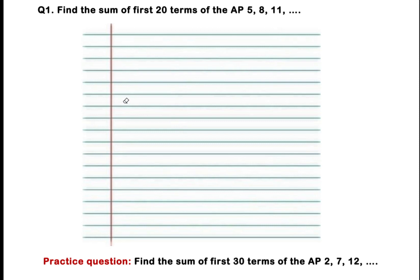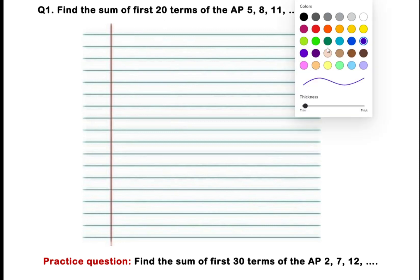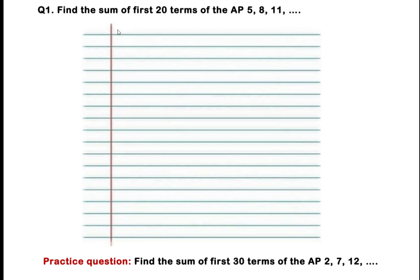The first step is write down the given AP. The given AP is 5, 8, 11 and so on. Find out the first term A and the common difference D and N. The first term is 5, therefore A equals 5.